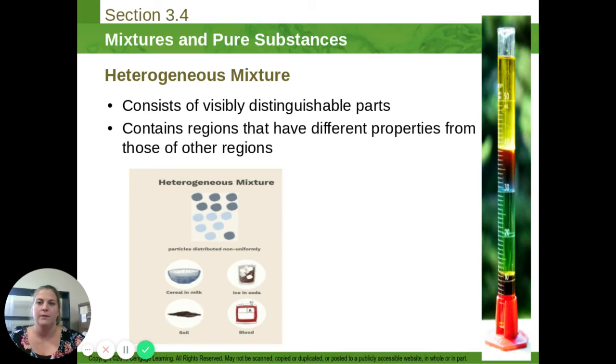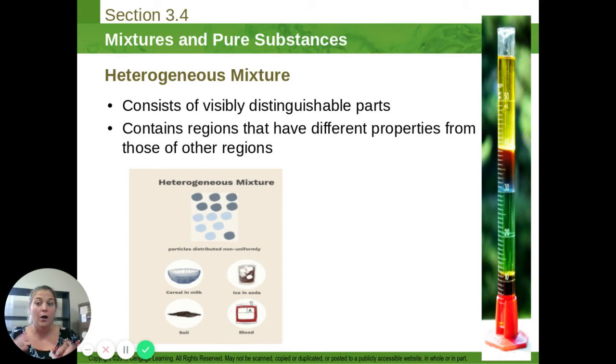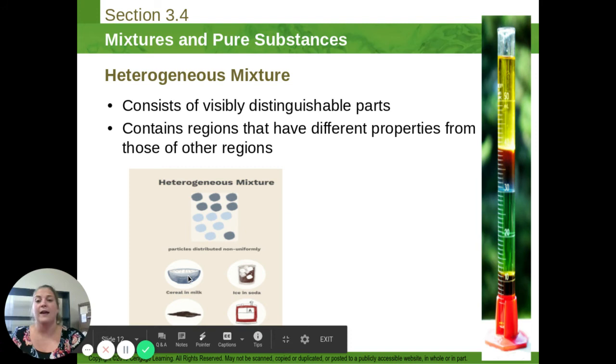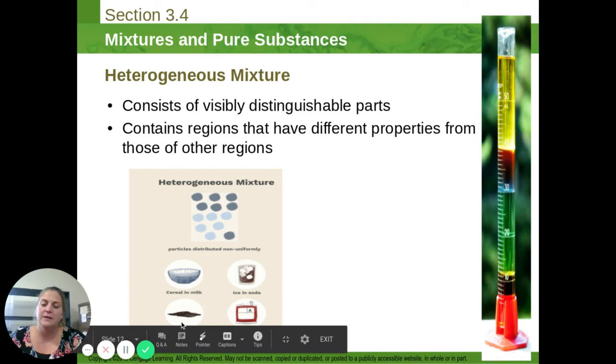Whereas heterogeneous mixtures are going to have distinguishable parts. If you look here in this graduated cylinder, there's a green layer, a red layer, a yellow layer. That is a heterogeneous mixture. There are a lot of things in that graduated cylinder, but you can see distinct parts. Cereal and milk has obvious parts. Ice and soda. There's that solid water part. There's the soda part. Those are distinguishable parts. Soil is an obvious heterogeneous mixture. You can see little pebbles. You can see different types of soil. You can see bugs. There's lots of things in soil.